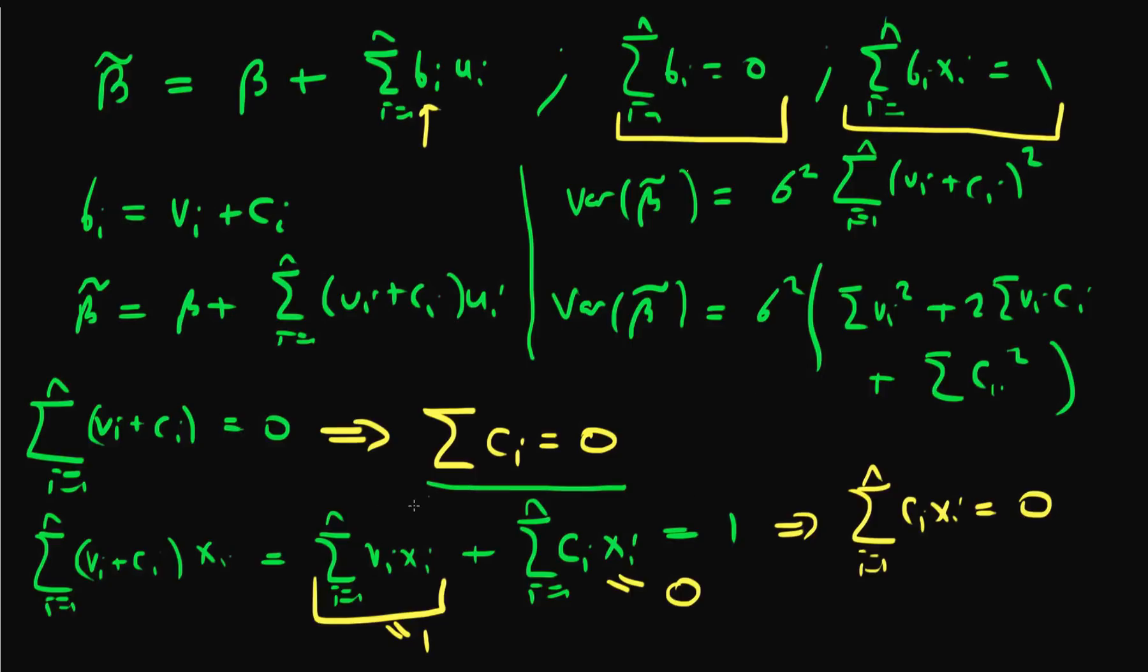We are going to use our sum of ci equal to 0 and our sum of ci xi equal to 0, together with our variance of beta tilde, to finalize our proof of the Gauss-Markov theorem in the next video. I'll see you then.